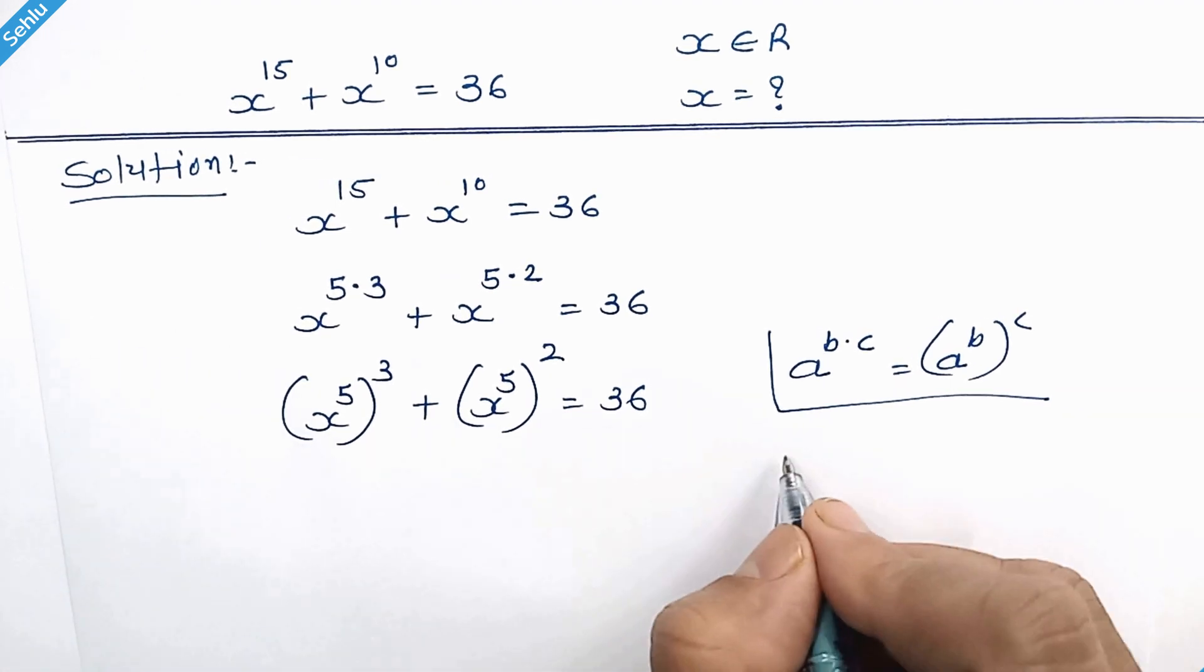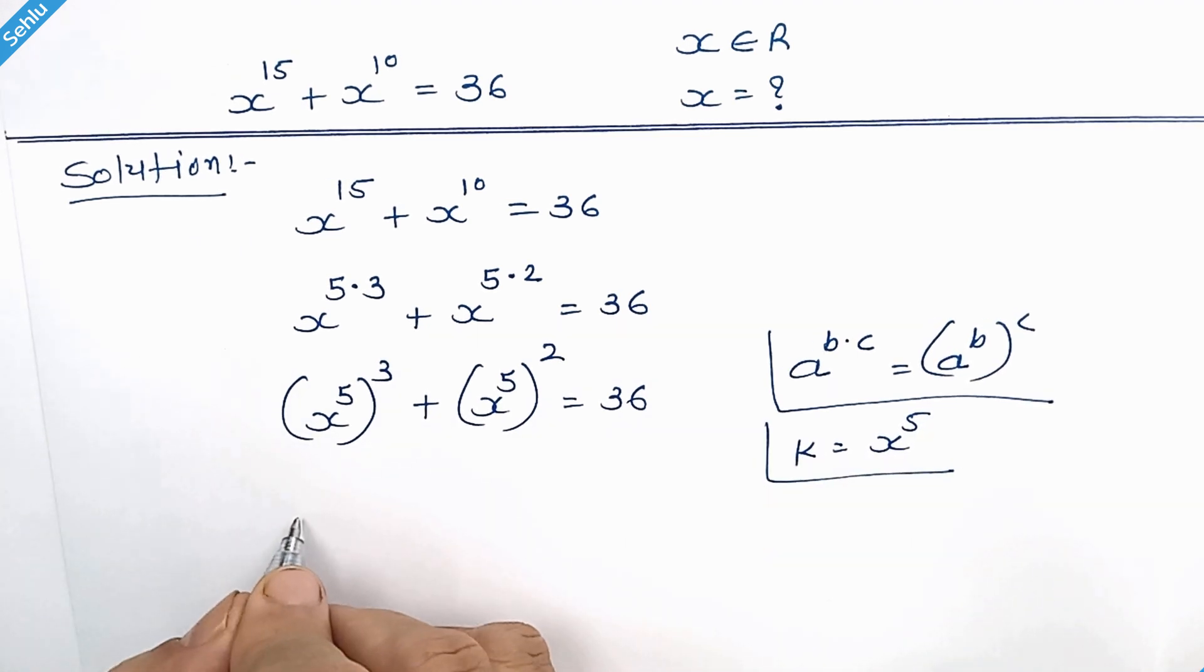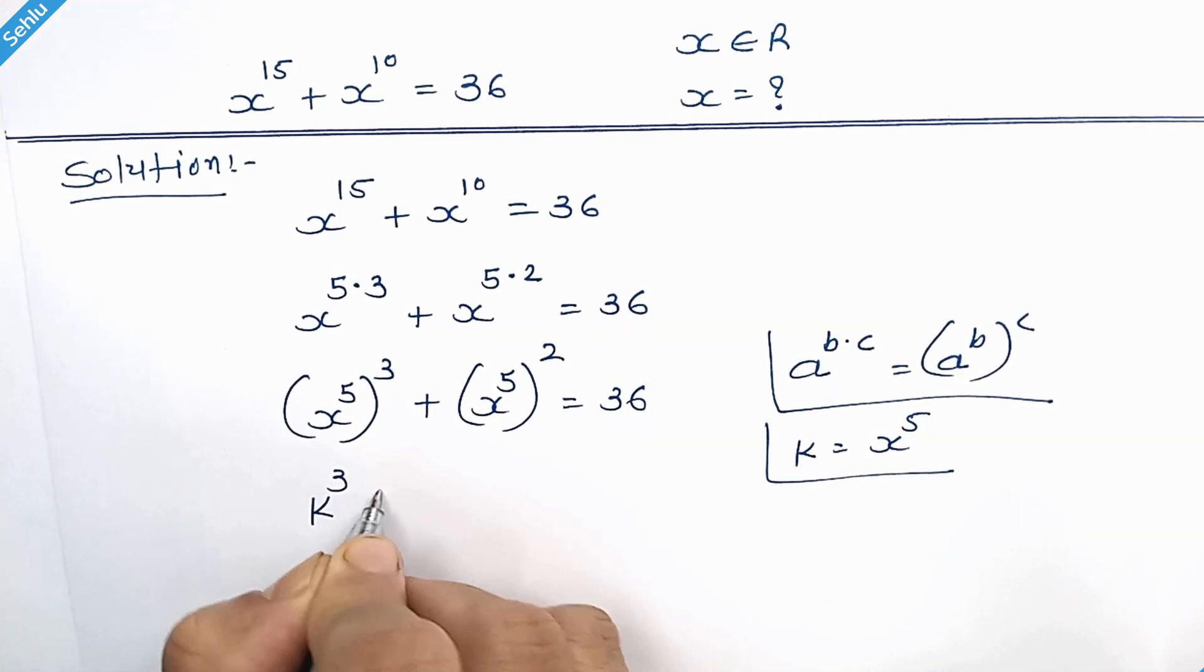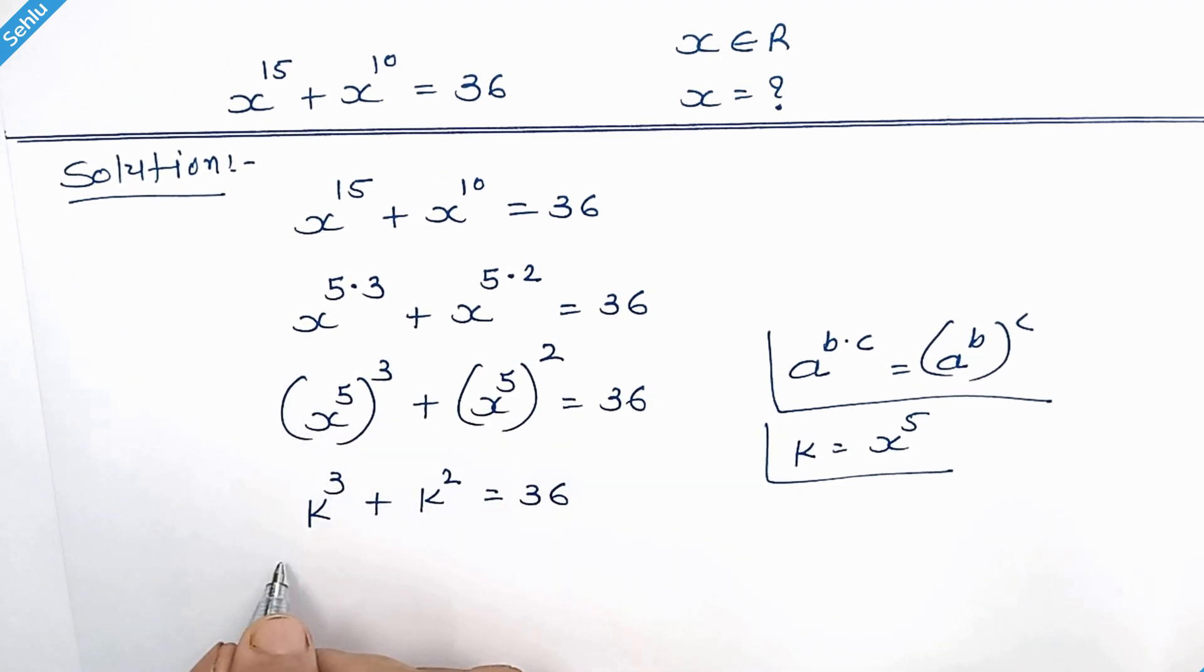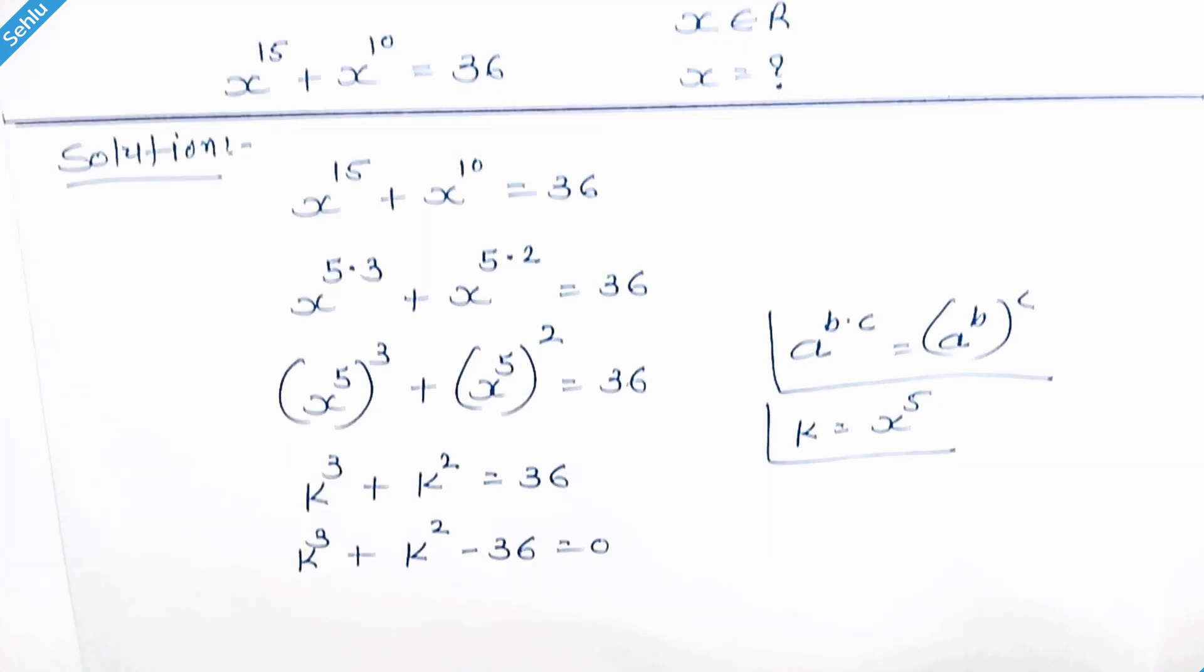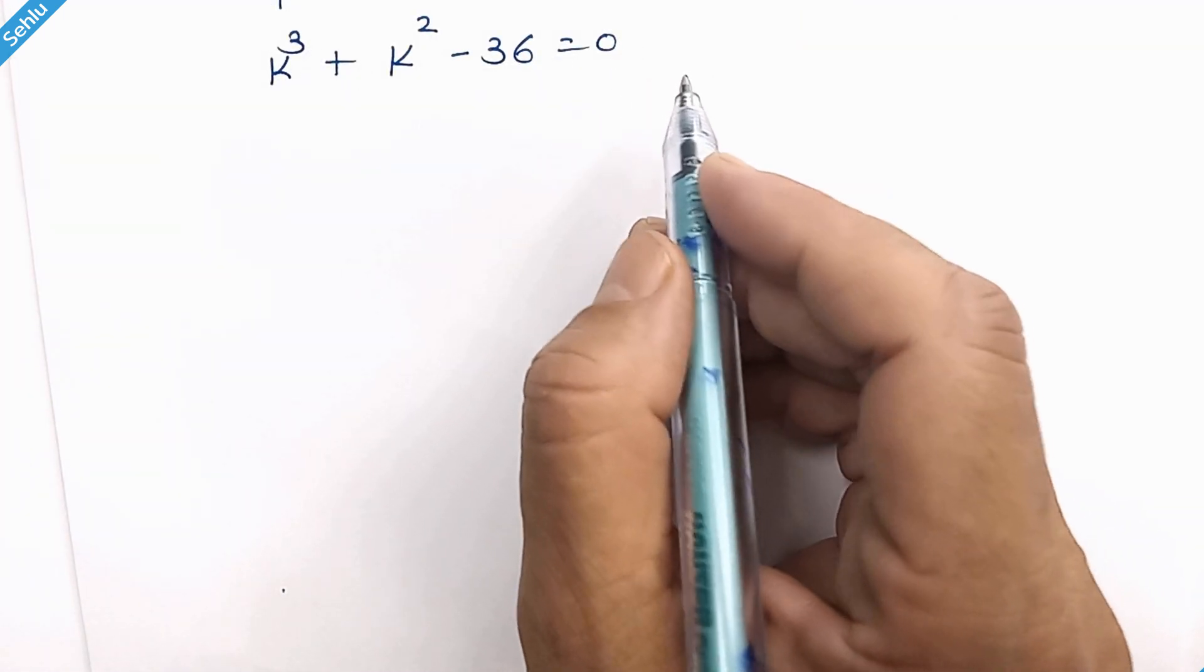Now let's take k in place of x to the power 5. So we have k cube plus k square is equal to 36. Move this 36 to the left hand side. Can we factorize this equation? Let's see.